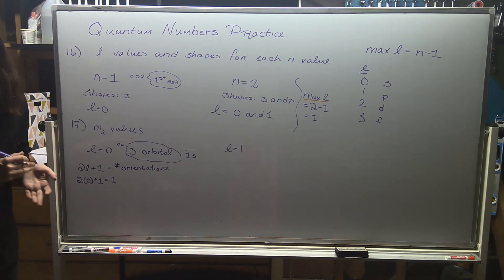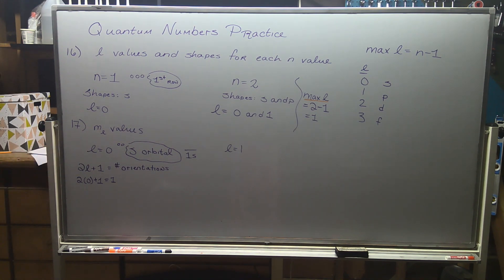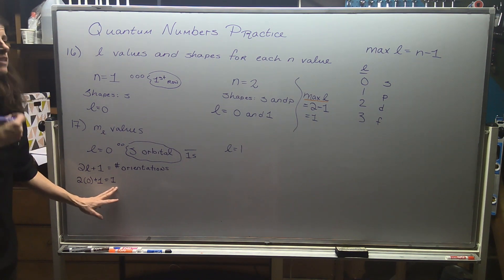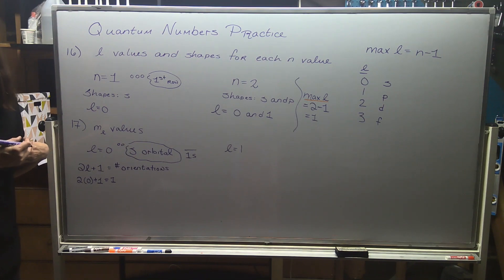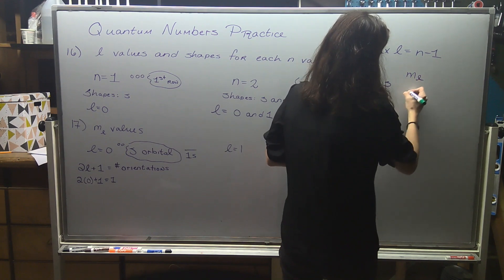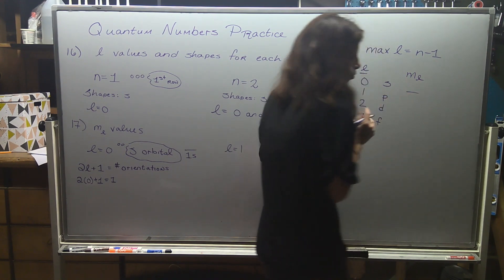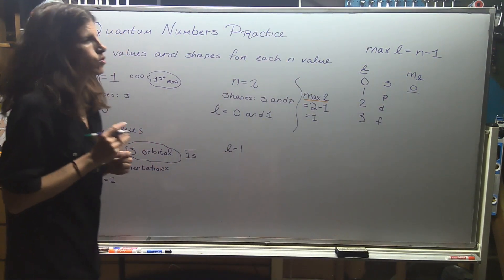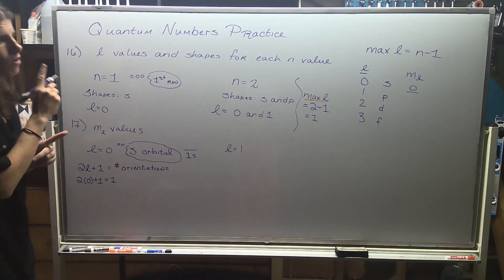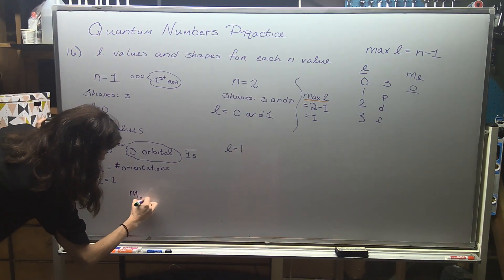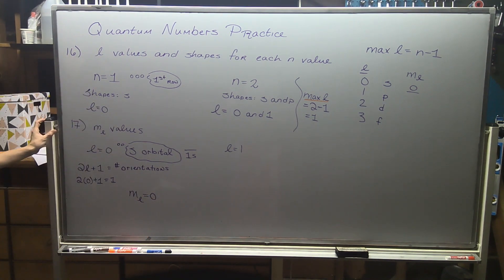Critical piece I discussed in the previous video: that's the number of orientations, not the actual ml values. The ml values are always centered around zero. For s we have just one orientation and we give it a value of zero. So the only allowable value under l equals zero is ml equals zero, indicating the s orbital can only orient one way and hold two electrons.